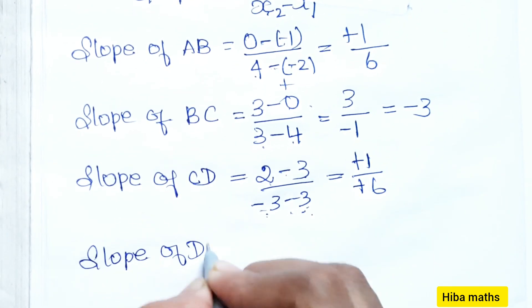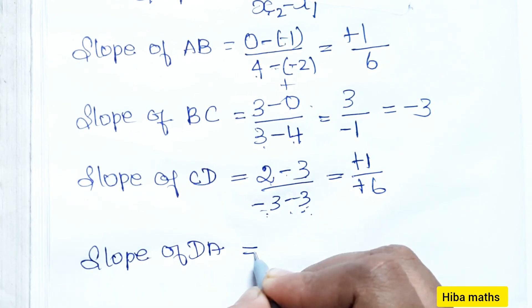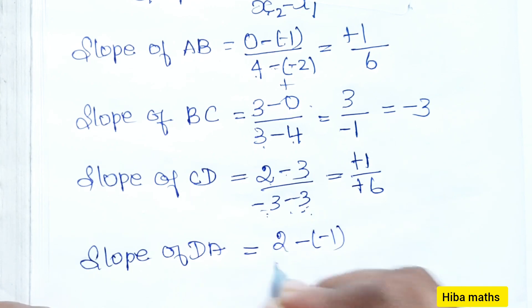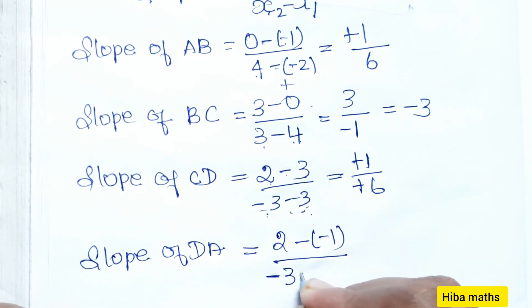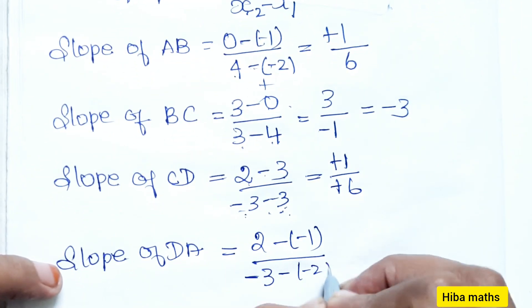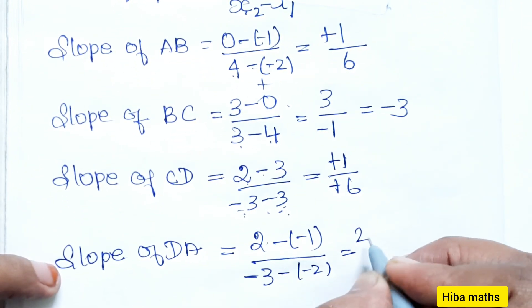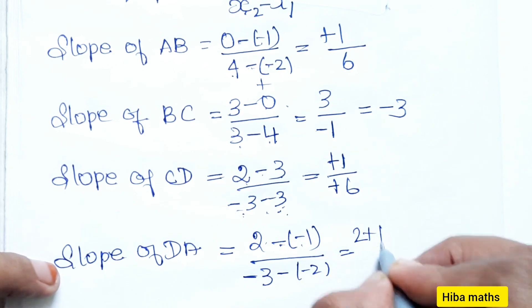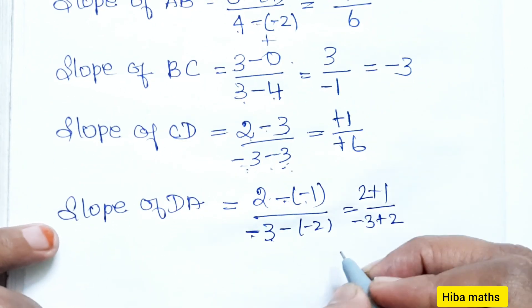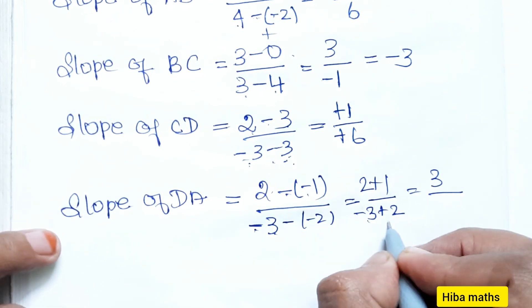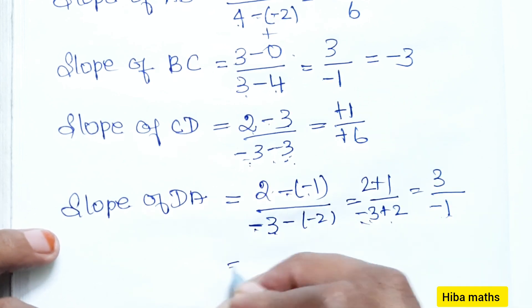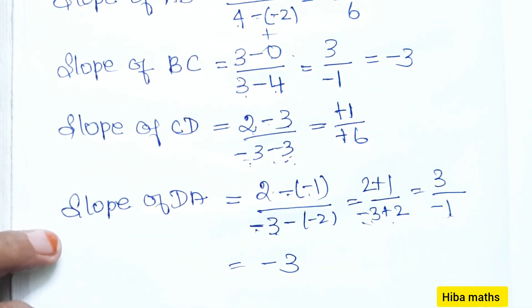Slope of DA: y2 - y1 = 2 - (-1) = 3, x2 - x1 = -3 - (-2) = -1. So slope of DA = 3 / (-1) = -3.